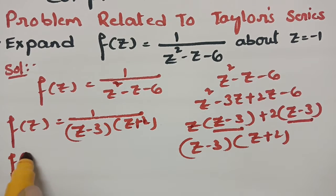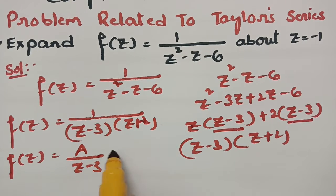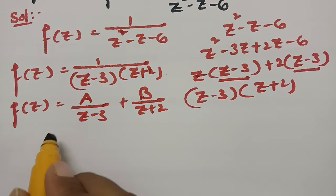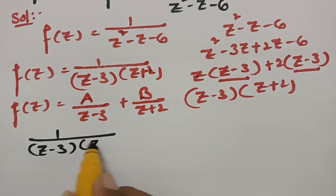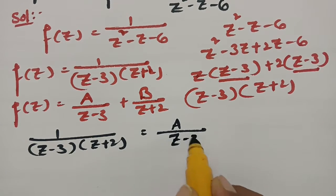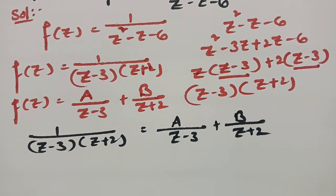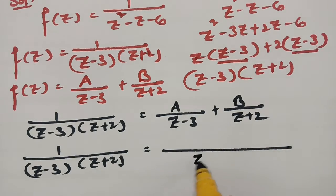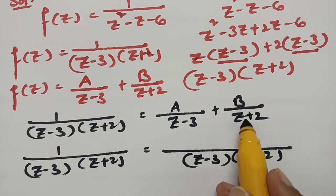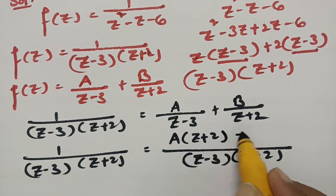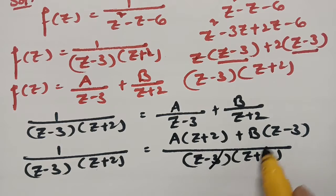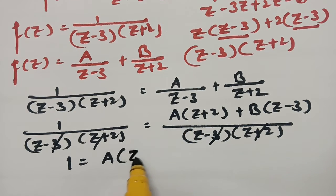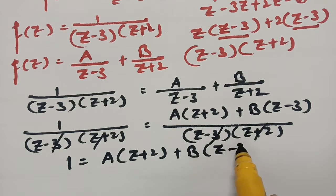Now if I resolve into partial fractions, this will be A/(z - 3) plus B/(z + 2). So 1/[(z - 3)(z + 2)] equals A/(z - 3) plus B/(z + 2). Taking LCM as (z - 3)(z + 2) and cross-multiplying gives: 1 = A(z + 2) + B(z - 3).